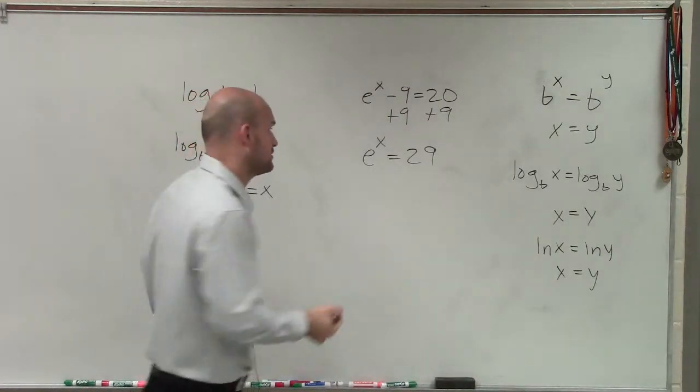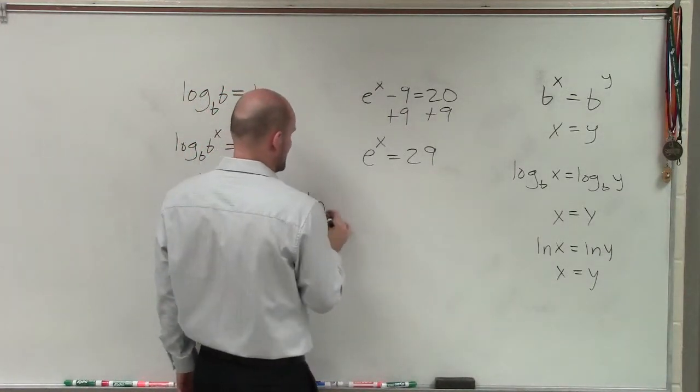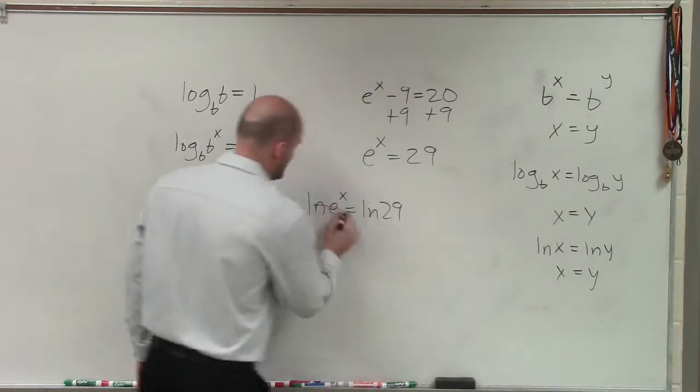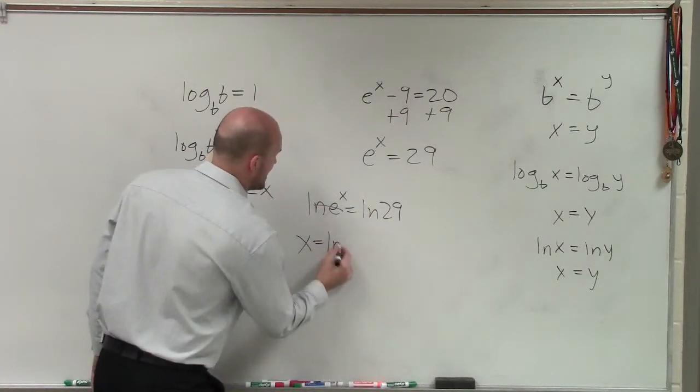Now, to solve this, I can use my one-to-one properties by taking the ln of both sides. So it'd be ln e to the x equals ln of 29. Therefore, I just have x equals ln of 29.